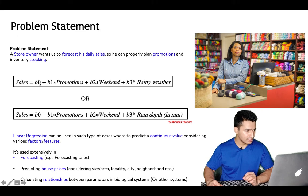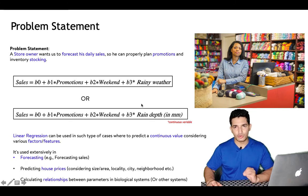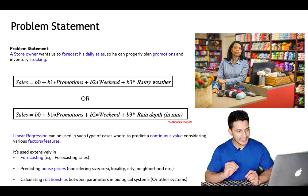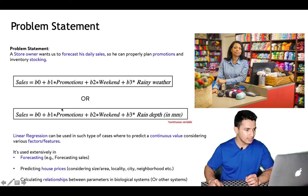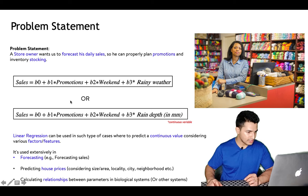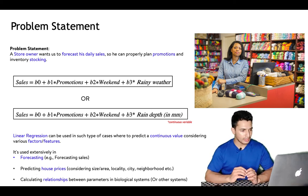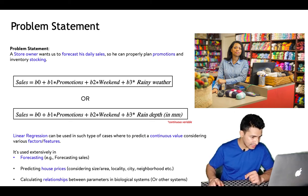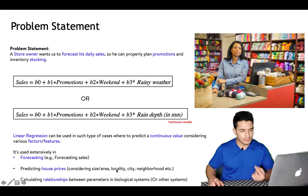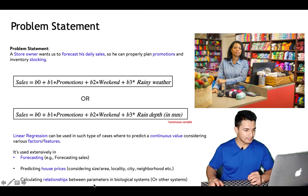From the problem statement it's clear we are trying to forecast sales. Linear regression is used in problems where we predict a continuous value considering various features. It's used extensively in sales forecasting, predicting house prices — where the price depends on area in square feet, locality, city, and neighborhood quality.